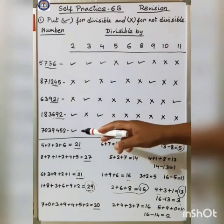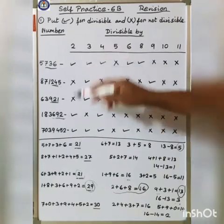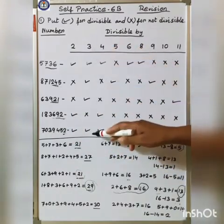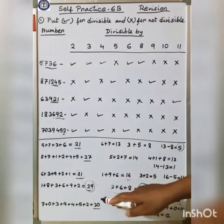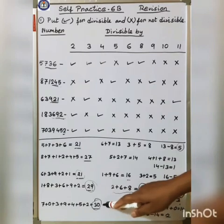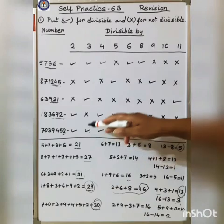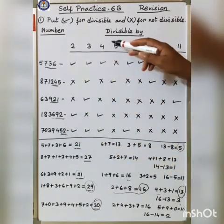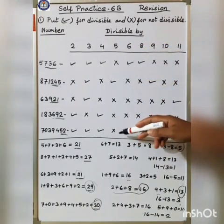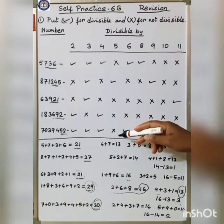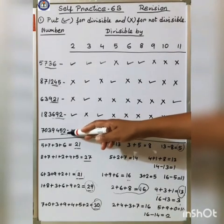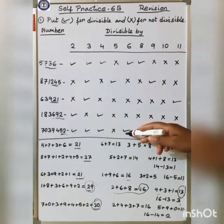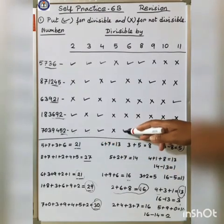Next question is 70,39,452. Divisibility by 2: last digit is 2, divisible by 2, so tick. For 3: the total of the digits is 30, and 30 is divisible by 3, so tick. For 4: the last 2 digits are 52, and 52 is divisible by 4, so tick. For 5: the last digit is 2, not 0 or 5, so cross. For 6: the number is divisible by both 2 and 3, so it is divisible by 6, tick.